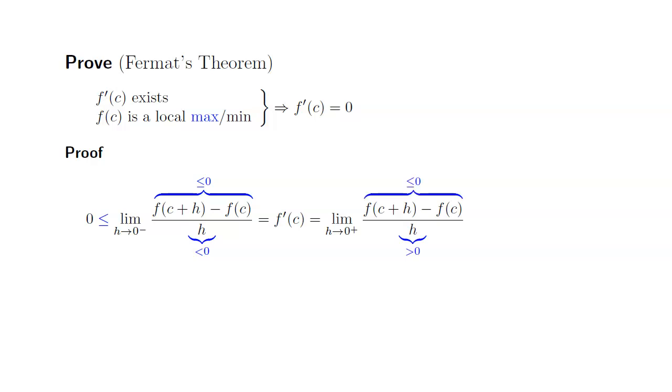If you divide something less than or equal to zero by a positive number, it's still going to be less than or equal to zero. Therefore, f'(c) must be between zero and zero. The only possibility is f'(c) equals zero.